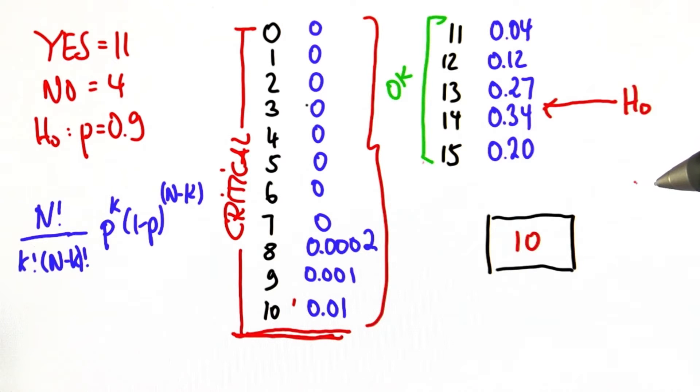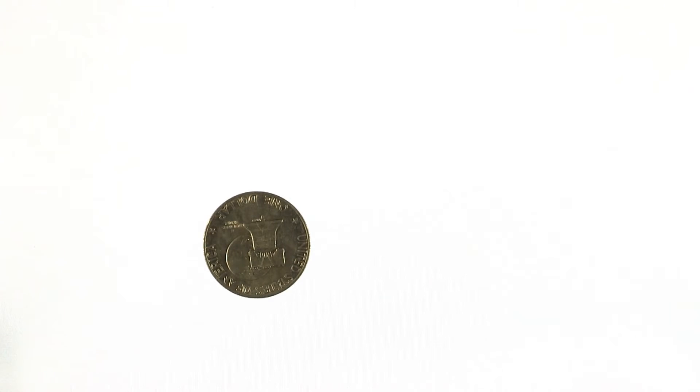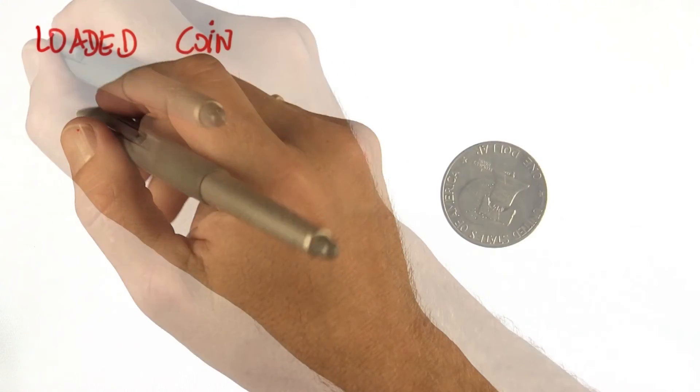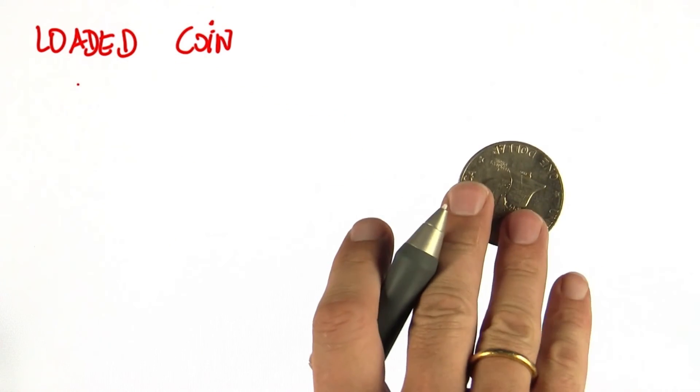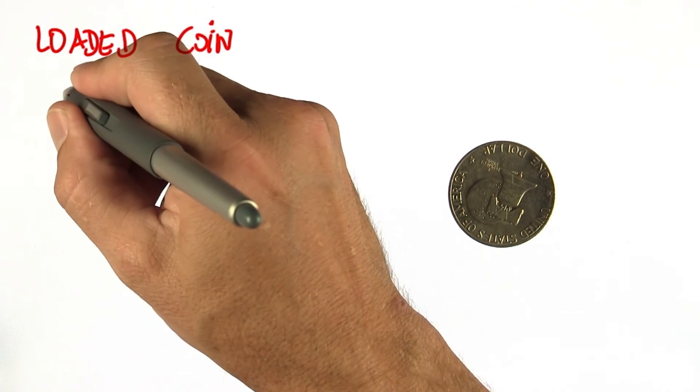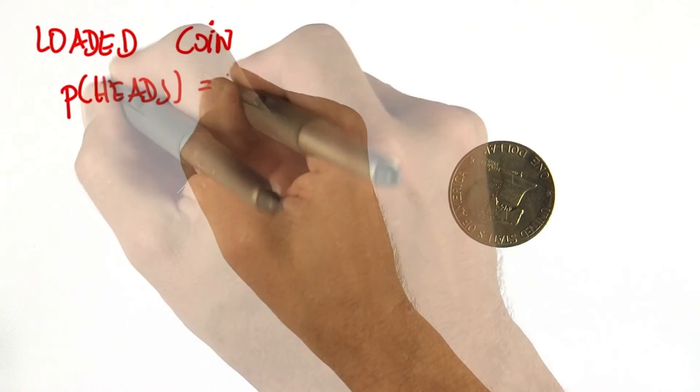So let's give this another try. Last Saturday, I went to the magic store and bought a loaded coin. I paid a lot of money for it. And the wizard that sold me the coin told me the probability of heads equals 0.3.